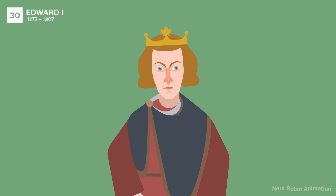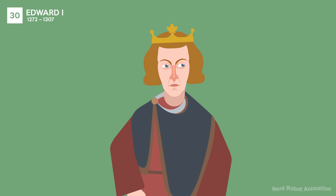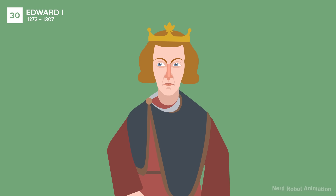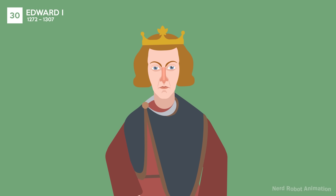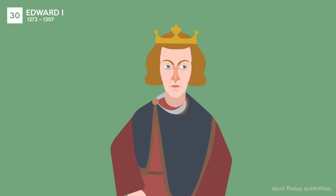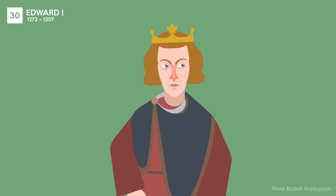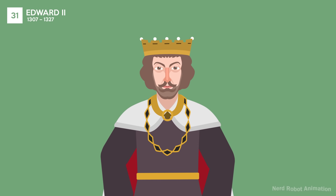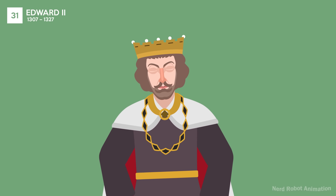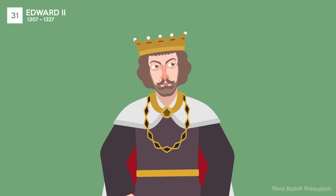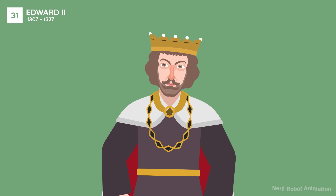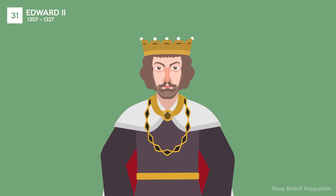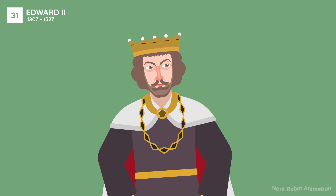Edward I, known as Longshanks and the Hammer of the Scots, was a formidable military leader. His reign included the conquest of Wales and significant legal reforms. Edward II's reign was troubled by his favoritism towards male companions and military defeats, including at Bannockburn. He was eventually deposed and murdered.